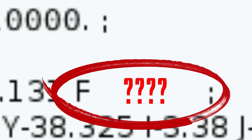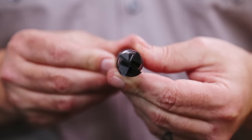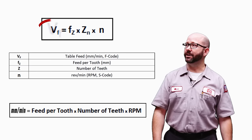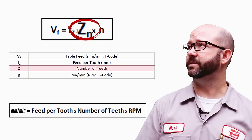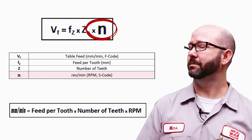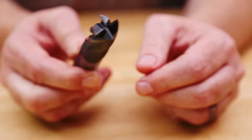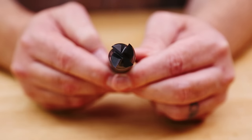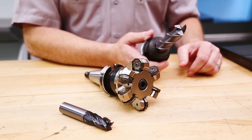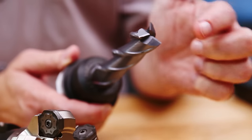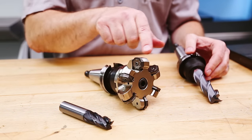The control now needs our table feed — our F code, a feed rate. The feed rate is how far the tool will travel in one minute, in millimeters, along the tool's center line. Here is our feed rate formula for end mills: table feed equals feed per tooth, times the number of teeth, times our RPM. A tooth is just a cutting edge along the outside of a tool — an insert is also a tooth. For most tools, the number of teeth matches the number of flutes.